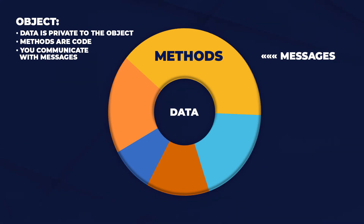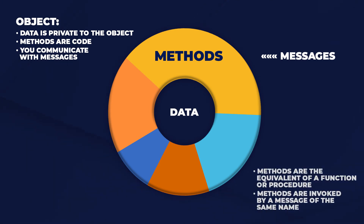It means that you can't access that data unless you ask the object. And if the object was designed to share that data with you, you can do that. How do you ask the object? You send it a message. A method is the equivalent of a function or procedure in other languages, and you invoke a method by sending a message with the same name. Those methods can access that private data, manipulate it, and give you an answer or perform some behavior. You invoke that behavior by sending a message.